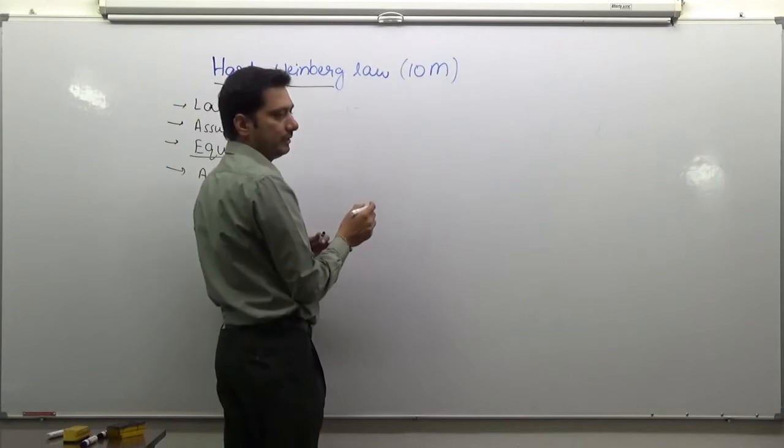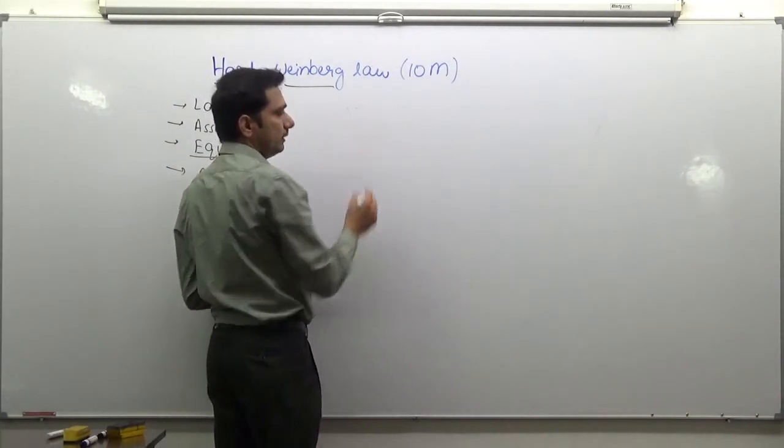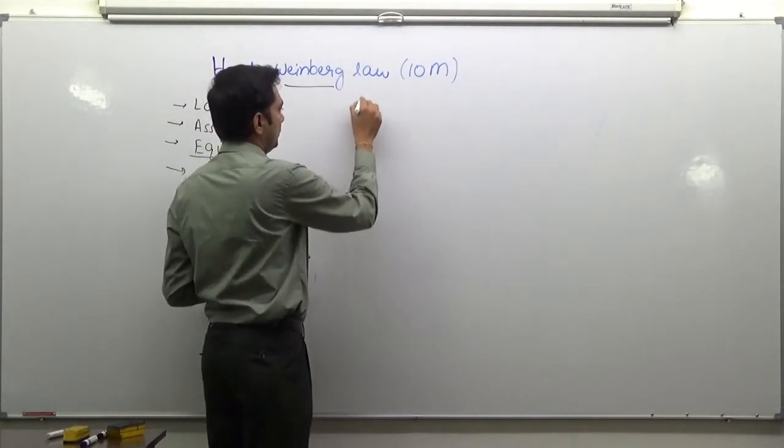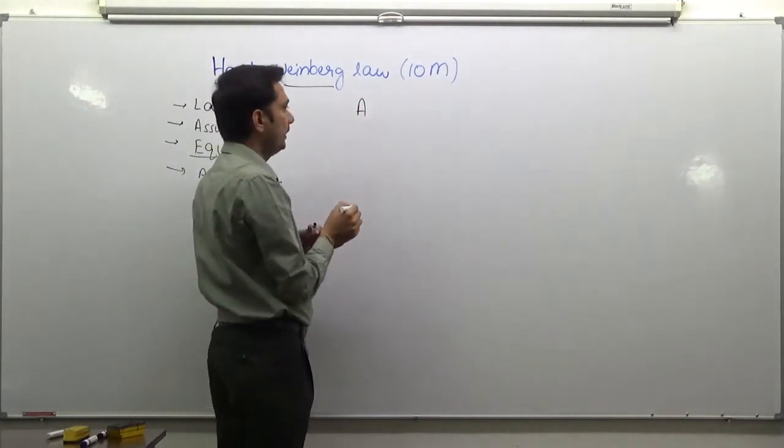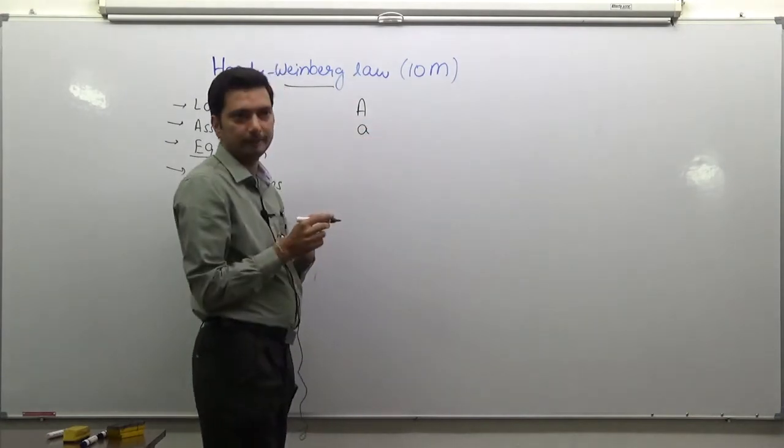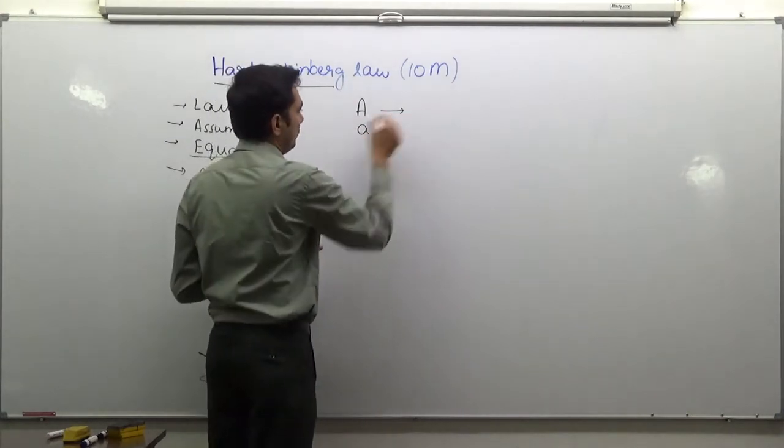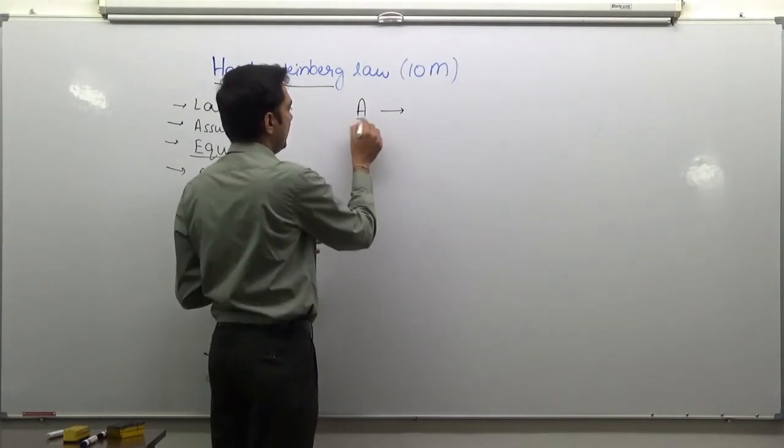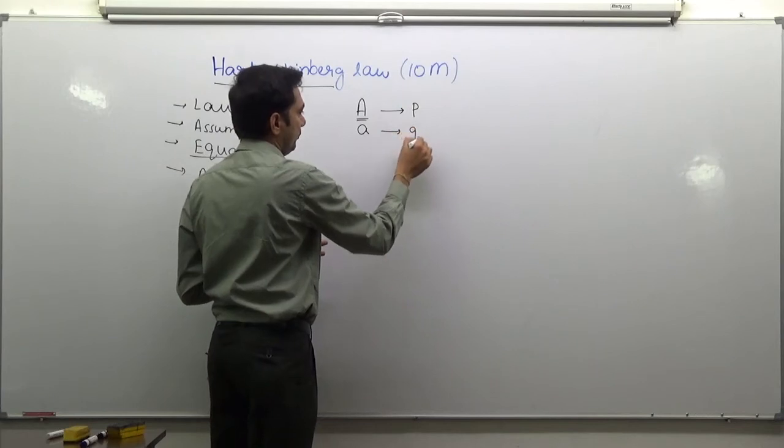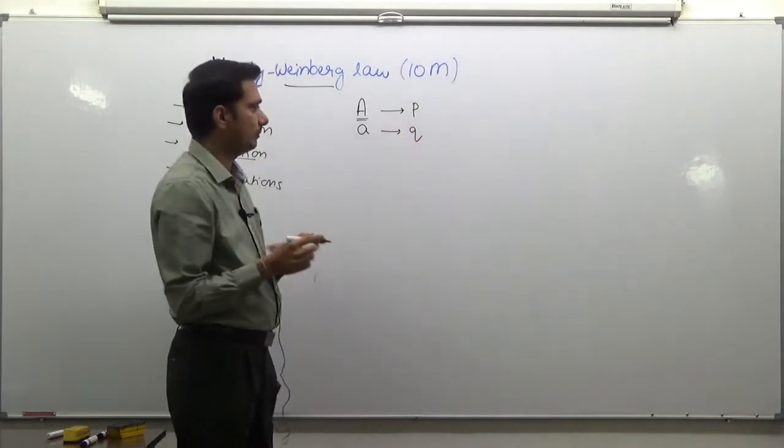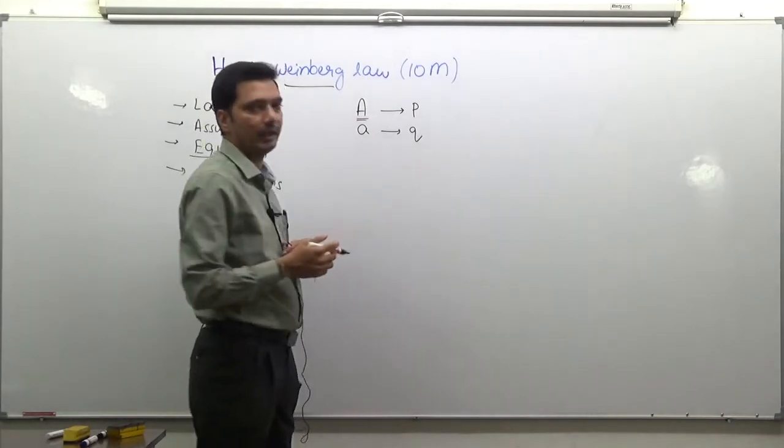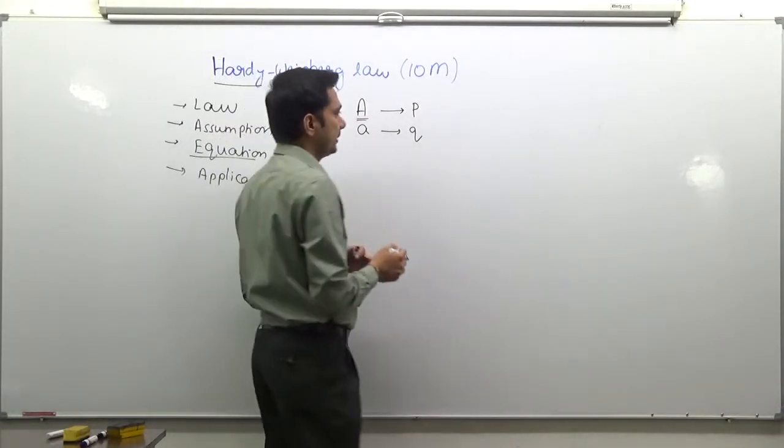We will take a simple example here. A character that has only two alleles. Let us assume that the dominant allele is capital A and the recessive allele is small a. If you assume that the frequency given by capital allele is P and the frequency for small allele is Q, let us make a simple chart to come up with the frequencies that we can actually calculate for these two alleles in a population.